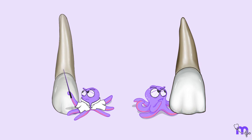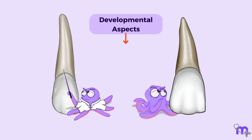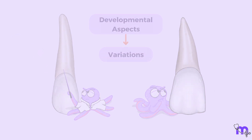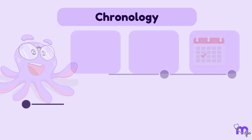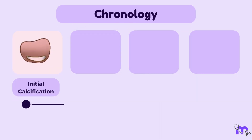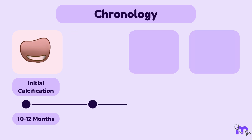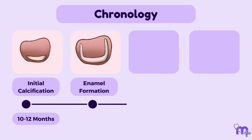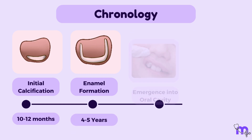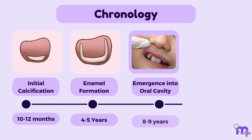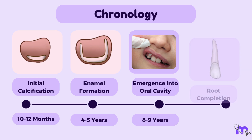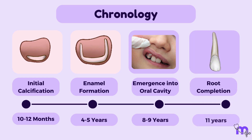However, the dissimilarities become apparent when we examine their developmental aspects, which can exhibit significant variations. Let us first discuss the chronology. The first evidence of calcification occurs between the ages of 10 to 12 months. Over several years, the tooth continues to develop, with enamel completion taking place around 4 to 5 years of age. Eruption generally happens between 8 to 9 years, and the root completes its development by the age of 11 years.